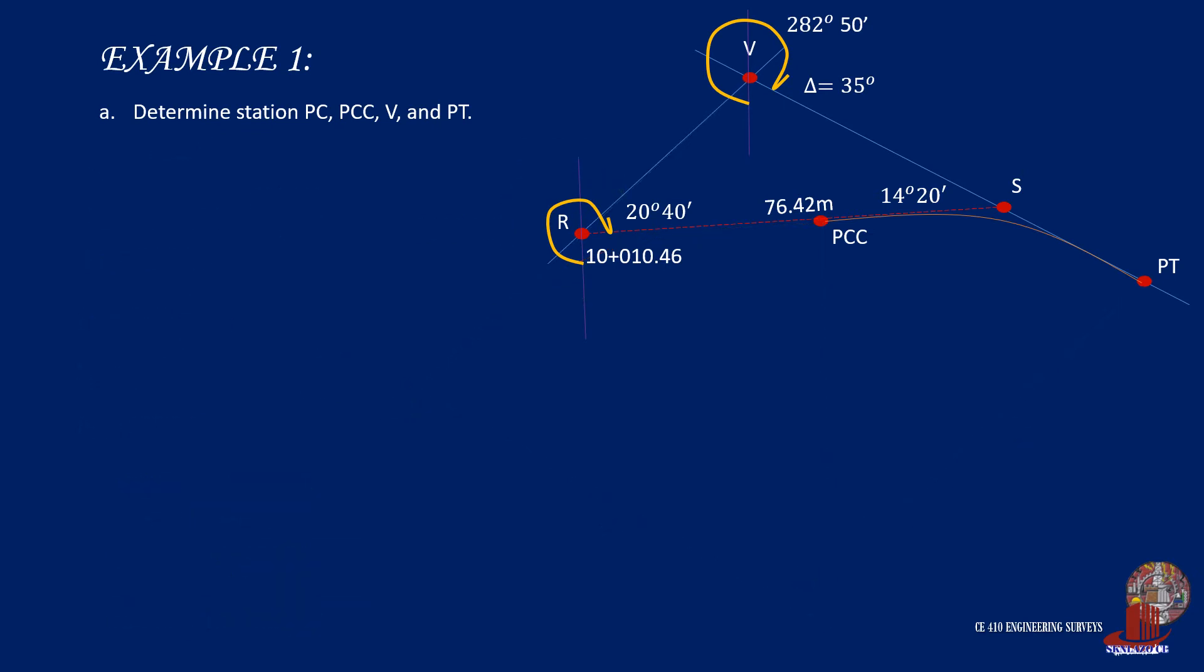In order to determine the location of the vertex, we consider the vertex triangle. We can compute for the last angle beta by subtracting the two known angles from 180 degrees, which would give beta as 145 degrees. Then, by using sine law, we get the relationship 76.42 meters is to sine of 145 degrees, and that is equal to RV with a sine of 14 degrees 20 minutes, and VS with a sine of 20 degrees 40 minutes. So, length RV can then be computed as 32.98 meters.